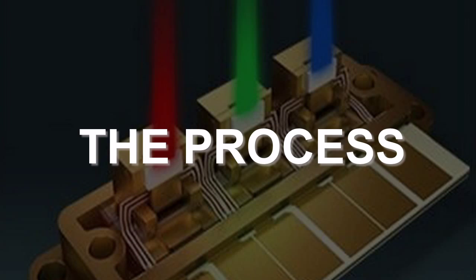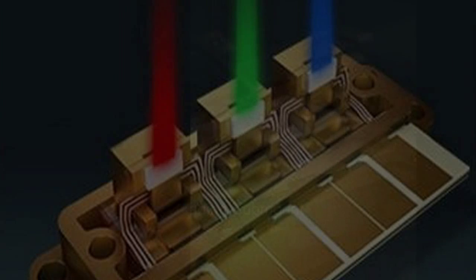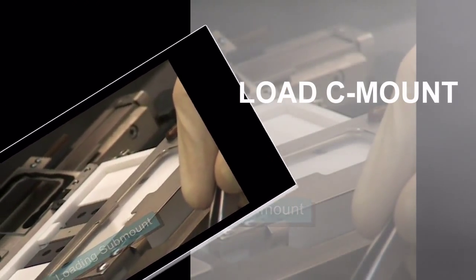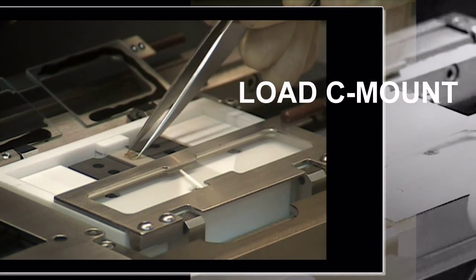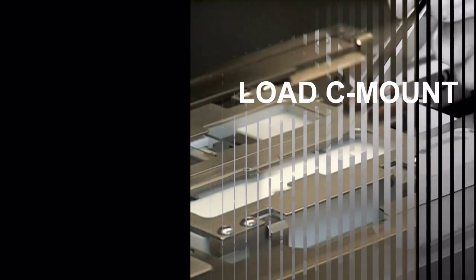Now, with the inert gas enclosure removed, let's take a look at the process. The C-mount, or substrate, is loaded onto the heating plate and held down by vacuum. Inert gas flow surrounds the active area.